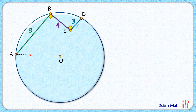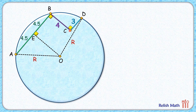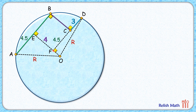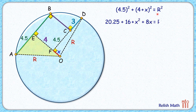For the third solution, let's assume the radius is R cm. From center O, drop a perpendicular on chord AB — by theorem, this perpendicular bisects the chord. Let's extend DC to meet OE at point F. This quadrilateral has 3 angles of 90 degrees, so it's a rectangle, giving CF = 4.5 cm and EF = 4 cm. Let FO = x cm. In triangle AEO, applying the Pythagorean theorem: 4.5² + (4 + x)² = R². Opening the bracket gives an equation in this form.